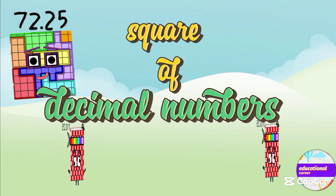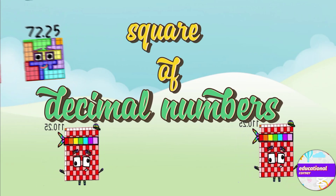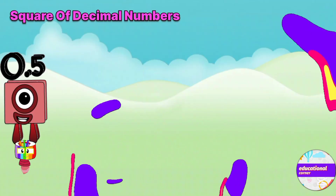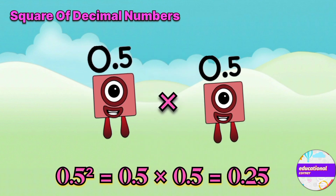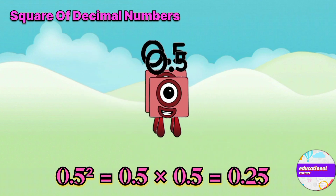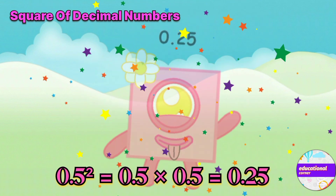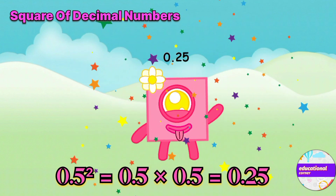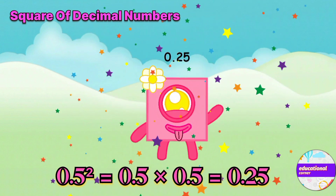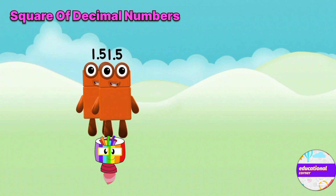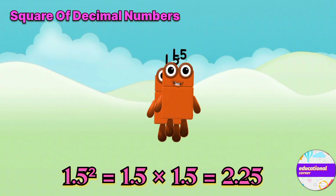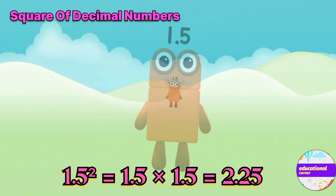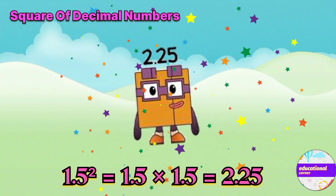Square of Decimal Numbers. 0.5 x 0.5 equals 0.25. The square of 1.5 is 2.25.